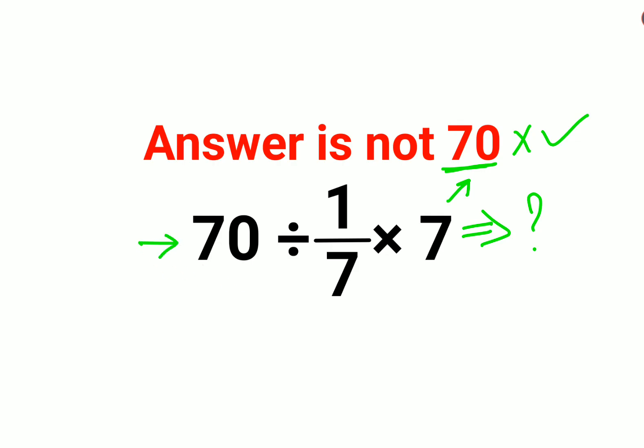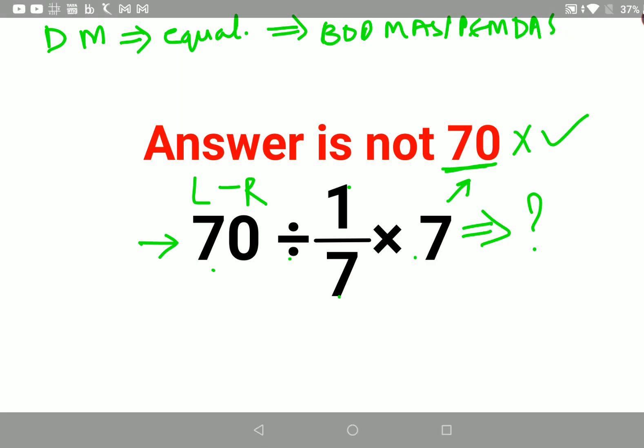First, we have 70 ÷ 1/7 × 7. Please understand: division and multiplication hold equal precedence, so you always have to follow left to right. This doesn't matter whether you're following BODMAS or PEMDAS. In both cases, for operations with just division and multiplication, you do the operation that comes first from your left-hand side.